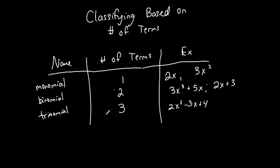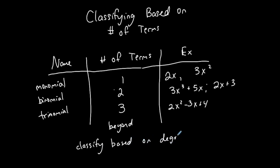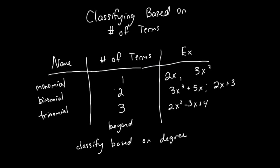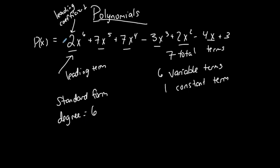If we go beyond three terms, we don't really have special names. We basically classify the polynomial by its degree. In the earlier example with seven terms, there's no special name like monomial, binomial, or trinomial — it has more than three terms, so we would call it a sixth degree polynomial function, classifying it based on the degree.